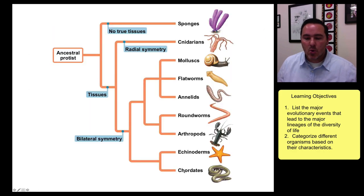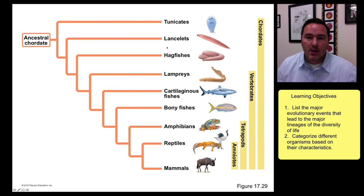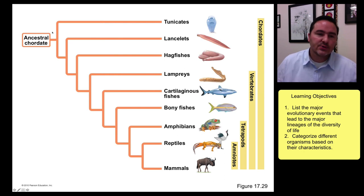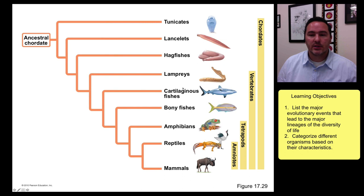That leads us to the chordates — another large and well-diversified lineage, and the one we belong to. Chordates are those that begin to have a backbone. The ancestral chordate probably did not have a backbone in its adult form, like the tunicates. But eventually this led to a simple precursor of the backbone called a notochord, and then eventually down into the fishes, amphibians, reptiles, and mammals — the vertebrates.